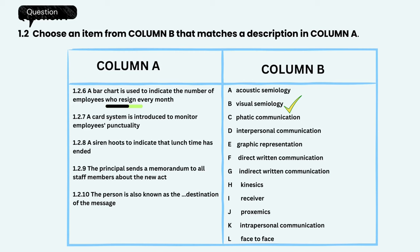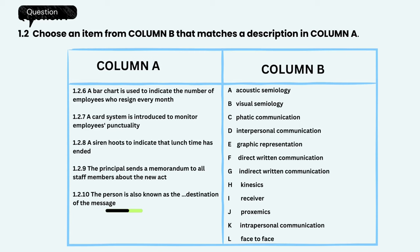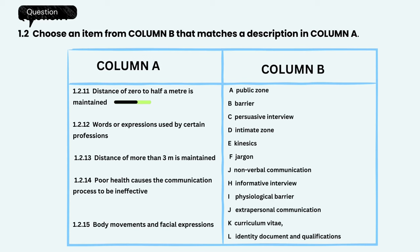A card system is introduced to monitor employees' punctuality — the correct answer is E, Graphic representation. A siren hoots to indicate that lunchtime has ended — the correct answer is A, Acoustic semiology. The principal sends a memorandum to all staff members about the new act — the correct answer is F, Direct written communication. The person also known as the destination of the message — the correct answer is I, Receiver. A distance of zero to half a meter is maintained — the correct answer is D, Intimate zone. Words or expressions used by certain professions — the correct answer is F, Jargon. Distance of more than 3 metres is maintained — the correct answer is A, Public zone.